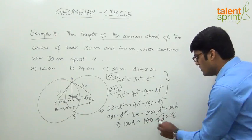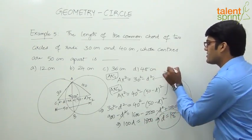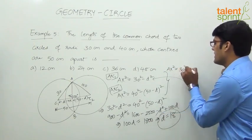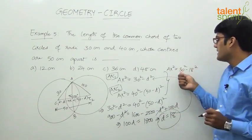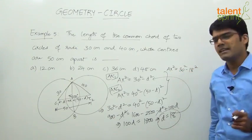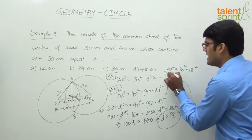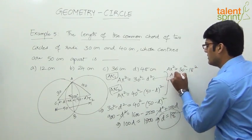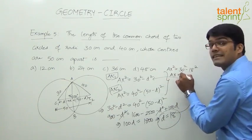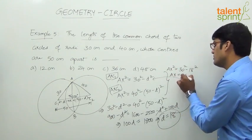So 100d equals 900 plus 900, which gives 100d equals 1800, therefore d equals 18. Now substitute d equals 18 back: AX squared equals 30 squared minus 18 squared, which is 900 minus 324, equals 576.